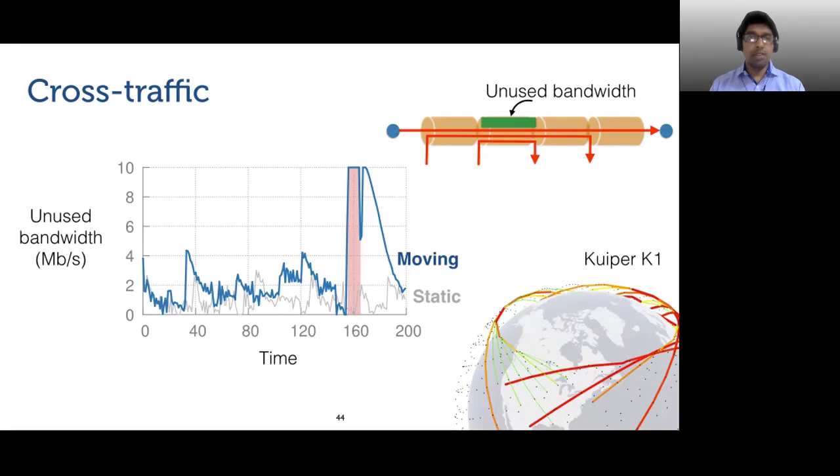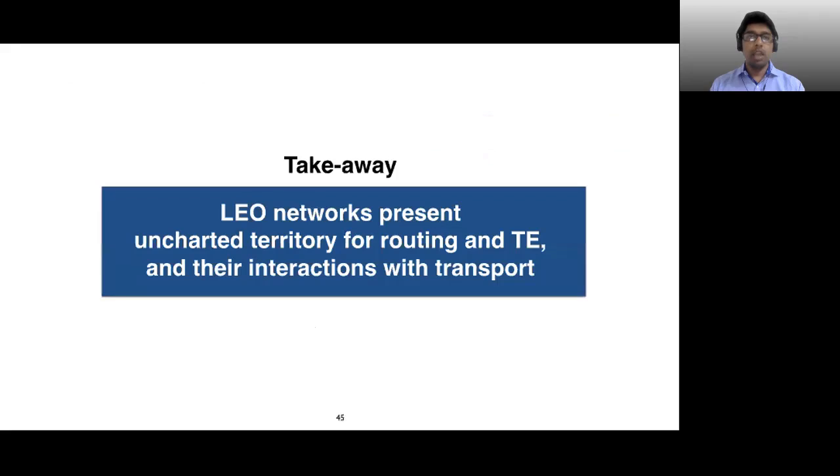The reason for this difference is the shifts in cross-traffic resulting from the path changes. Links constituting a GS pairs shortest path change over time, and for each link, the set of GS pairs it is used for changes as well. This implies that the traffic mix at any link is highly dynamic, making it difficult for transport to adapt. The takeaway is that LEO networks present new routing, TE, and transport challenges. Routing and traffic engineering could be planned ahead, such that knowing the upcoming changes in paths, traffic can be shifted a priori from links that will become new bottlenecks soon.